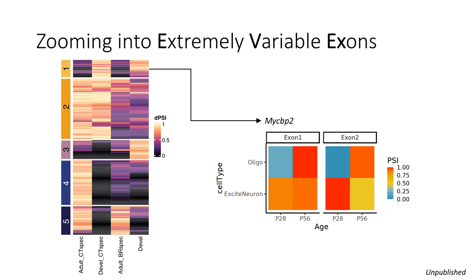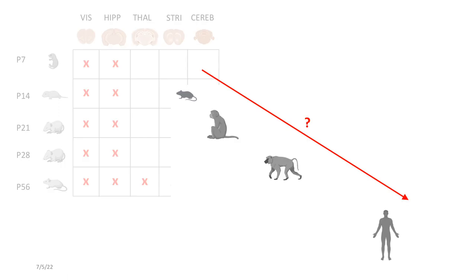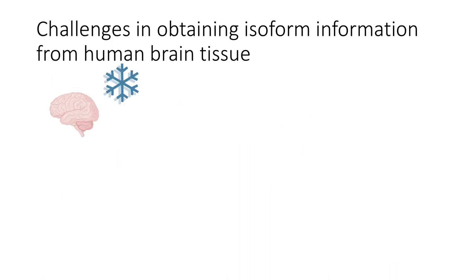So all this was well and good in the mouse brain. However what we really want to know is whether these results can be extrapolated to humans. However there are many different challenges in obtaining isoform information from human tissue. Primarily is the fact that human brain tissue is usually obtained frozen, so one workaround is to try single nuclei instead of single cell sequencing.